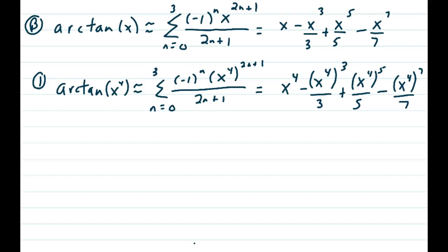Problem B. The arctan of x is approximately equal to the power series, the summation n equals 0 to 3 of negative 1 to the nth, x being raised to 2n plus 1 over 2n plus 1. If we were to expand this, we'd get x minus x cubed over 3 plus x to the 5th over 5 minus x to the 7th over 7.